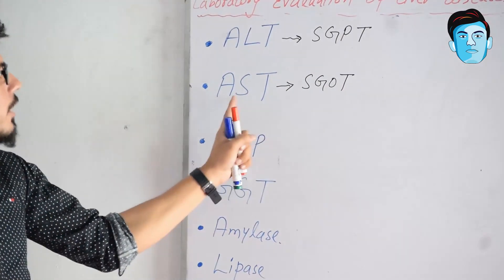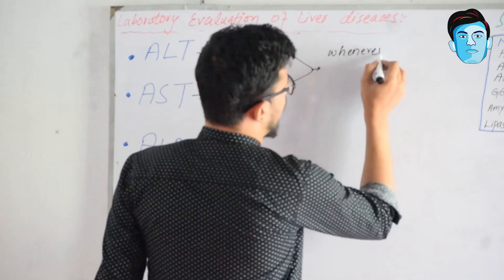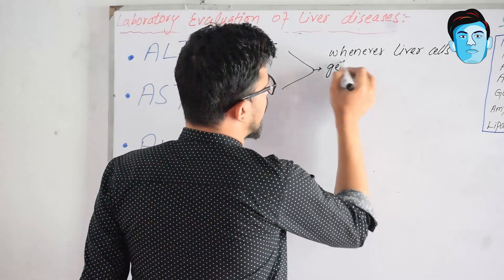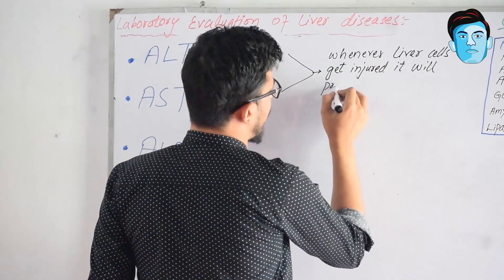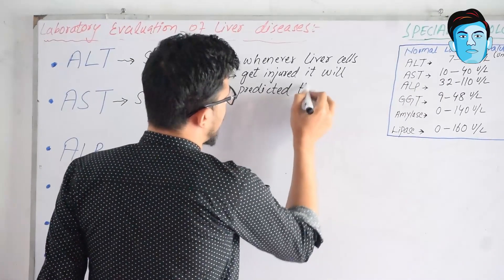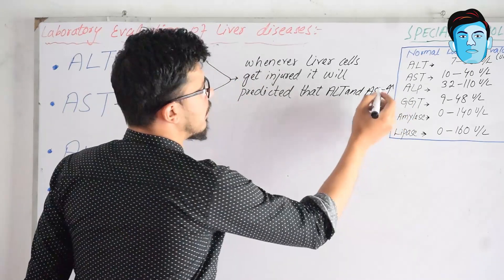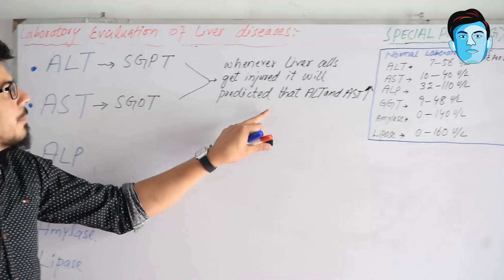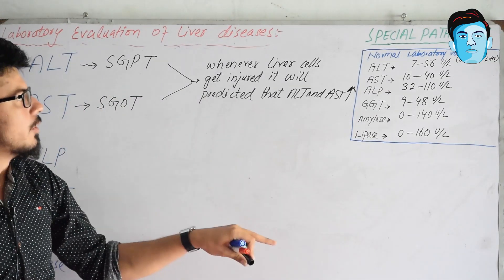Similarly, we use the term AST instead of SGOT. Whenever liver cells — that is, hepatocytes — get injured, it is predicted that ALT and AST values get raised from their normal value.